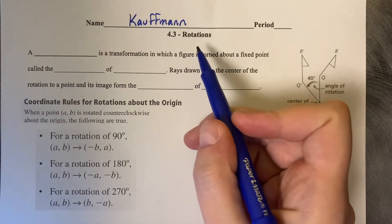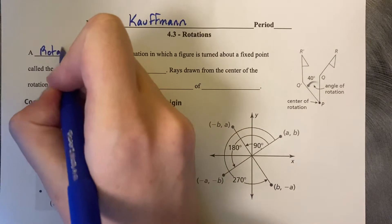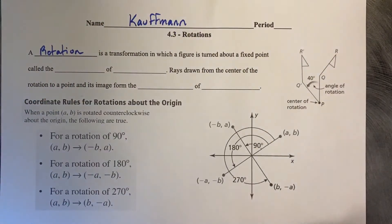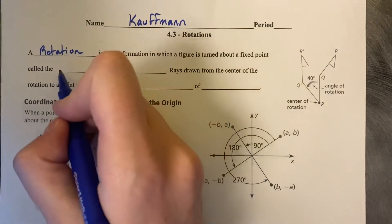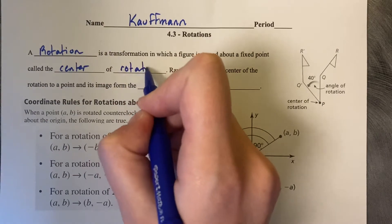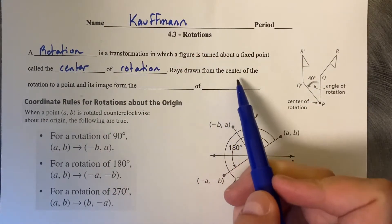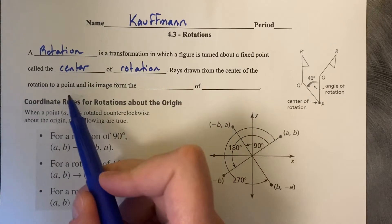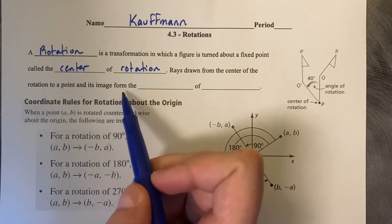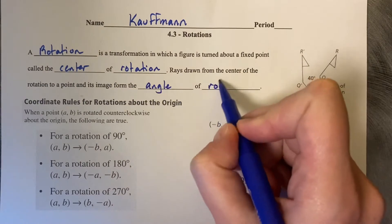4.3 Rotations. A rotation is a transformation in which a figure is turned about a fixed point, called the center of rotation. Rays drawn from the center of the rotation to a point and its image form the angle of rotation.